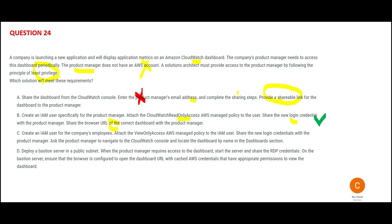This follows the principle of least privilege — when you give just read-only access, that person can only see the reports. Now option C says you create a user, but not for the product manager — you create one for employees with read-only access, then share the login credentials with the product manager. This means telling the product manager to go to the console and find the dashboard by name, which involves too many steps.